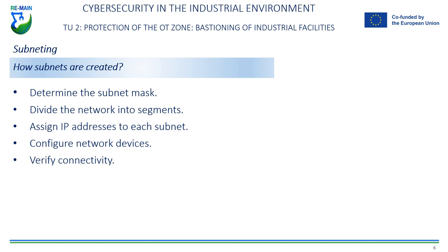Fifth, verify connectivity. You must verify that devices on each subnet can communicate with each other, as well as with devices on other subnets and the Internet if necessary. It is important to note that creating subnets can have an impact on network performance, as it can increase the complexity and processing time of network devices. Care must be taken to ensure that the network is appropriately sized and configured to support the expected traffic load.